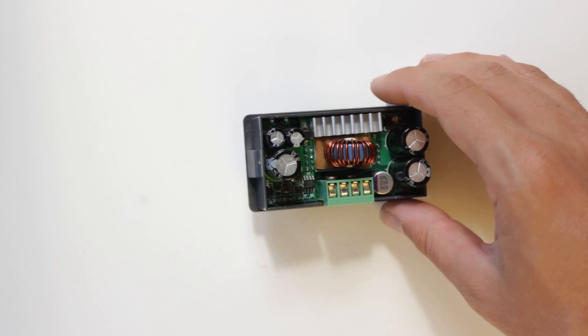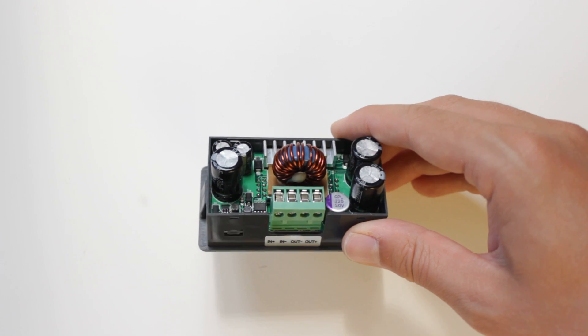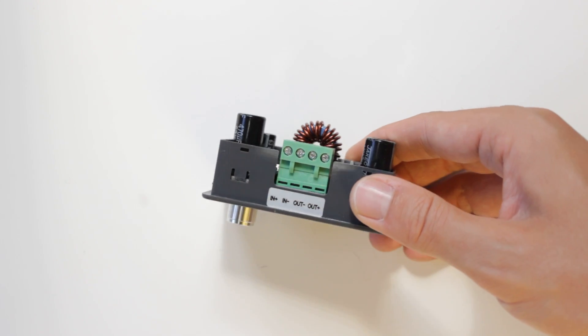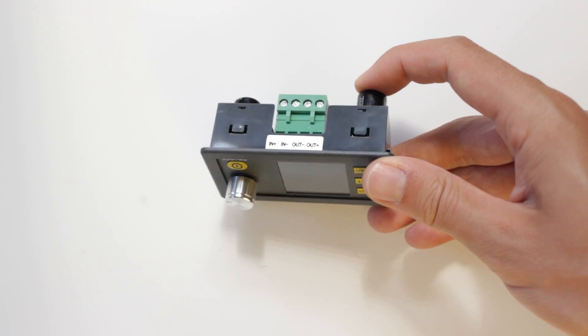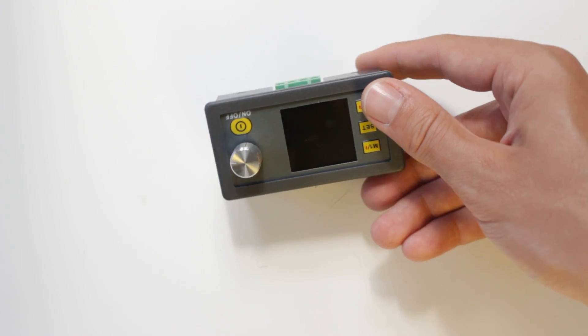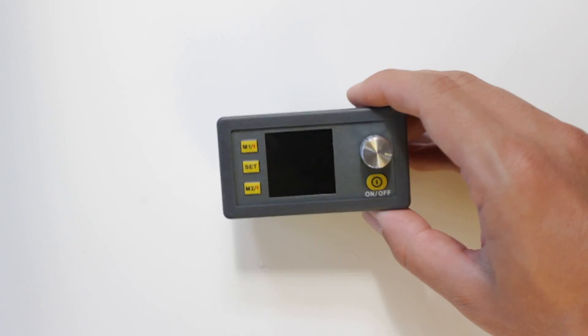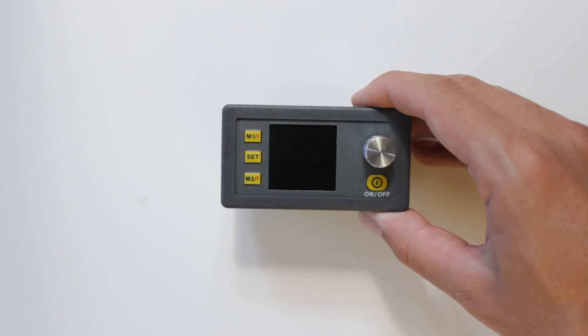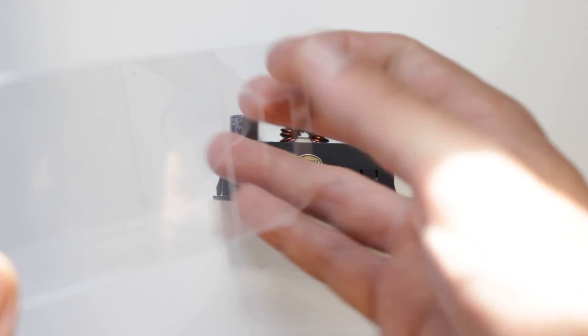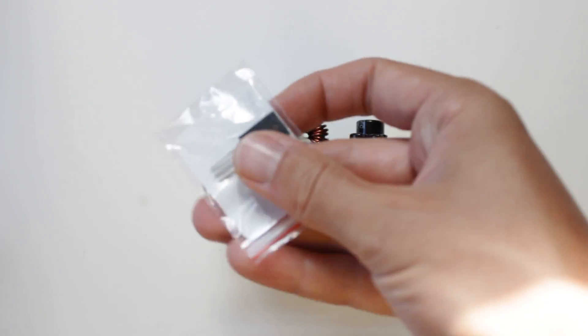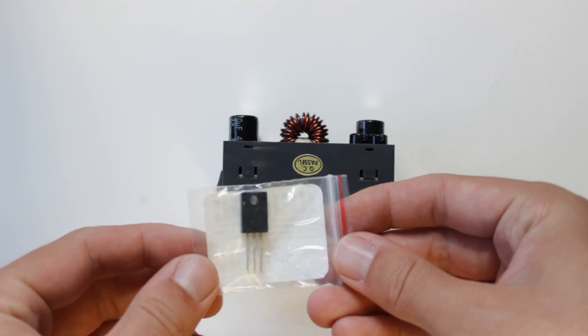Therefore I decided to build a new one using a switch mode voltage regulator from Amazon that can supply up to 5A and 50V. It even has constant current mode, which could be useful when testing circuits or charging batteries. In the package there was also a diode recommended for use with inductive loads on the output.